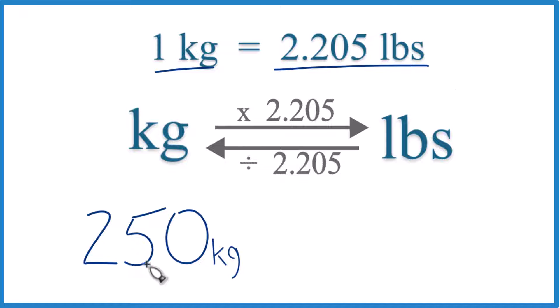So if we had 250 kilograms, we just multiply it by 2.205 pounds. That would give us our pounds. This is what we call a conversion factor. We need it when we go from kilograms to pounds or pounds to kilograms.